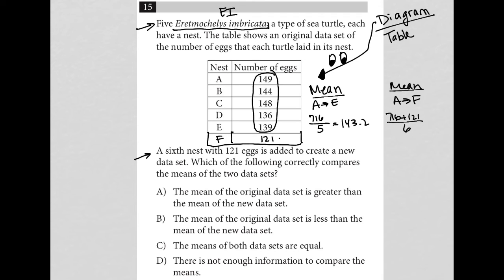So my calculator now, 716 plus 121 is 837. 837 divided by 6 is 139.5. So we can see that our mean decreased from our original state here.